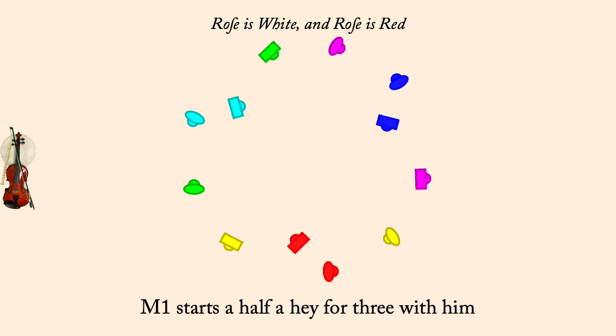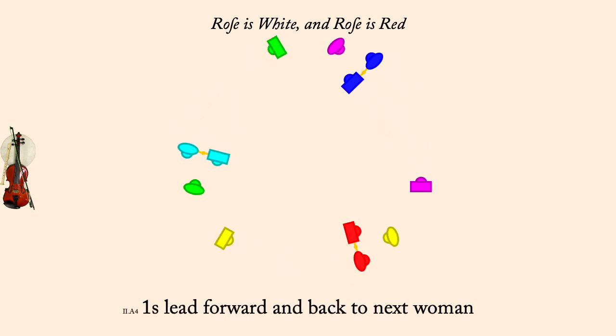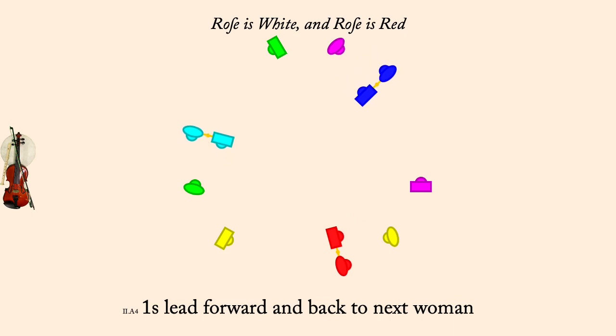Ones lead forward to next woman and back. Man one starts half a hay for three with her.